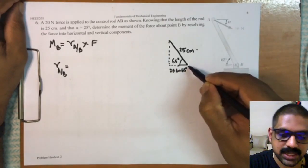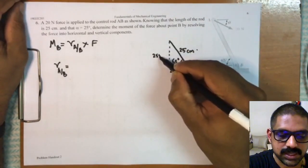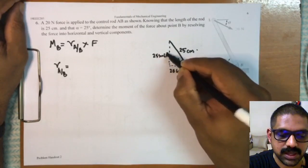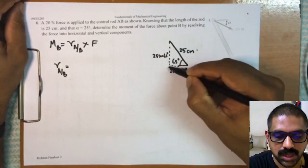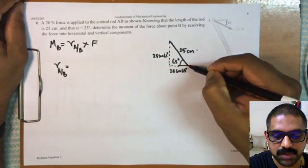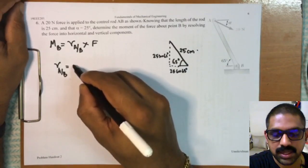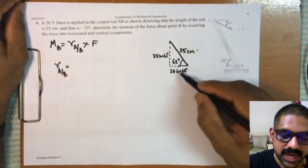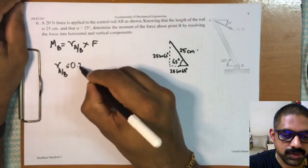Now here, 25 cos 65 degrees is acting in the negative x direction, and 25 sin 65 is acting in the positive y direction. So this plus this becomes the direction from B to A. So here I have to write that as minus 25 cos 65, so minus 0.25...